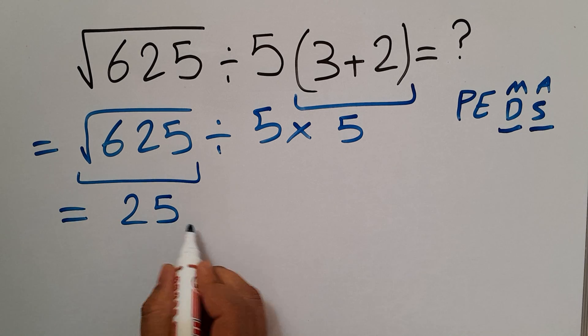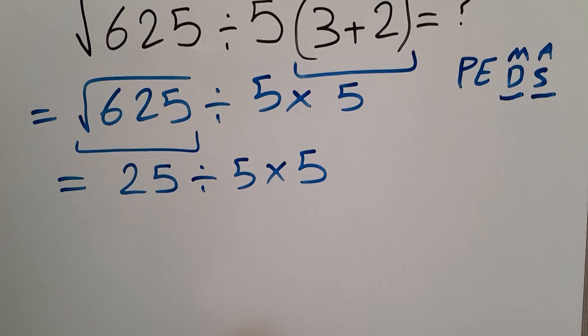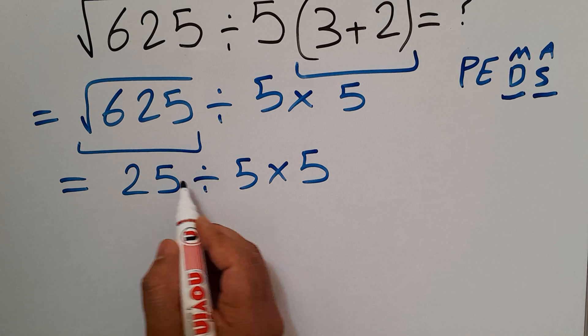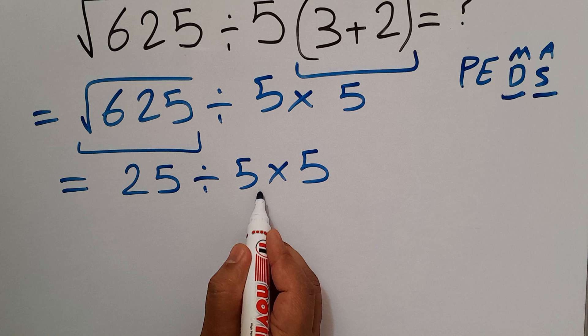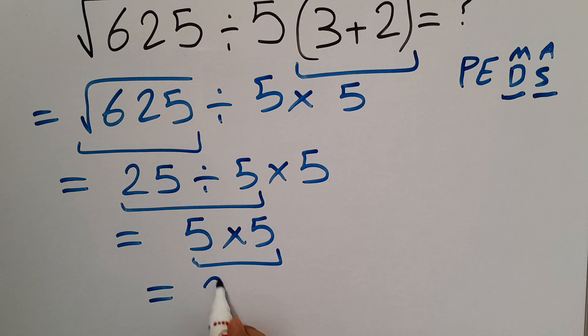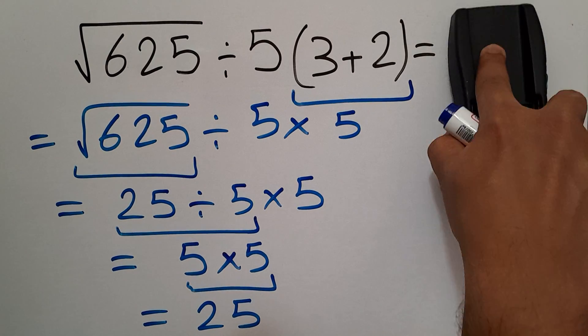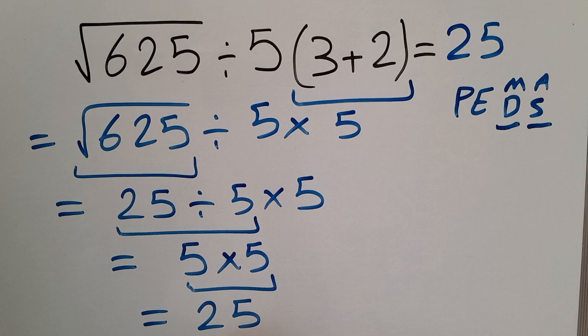Okay, so 25 divided by 5 times 5. As I said, multiplication and division have equal priority and we have to work from left to right. So first 25 divided by 5, which equals 5. So we have 5 times 5, and this is equal to 25. So our final answer to this problem is 25.